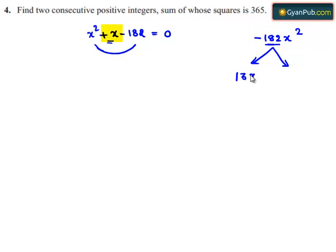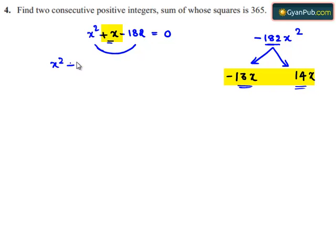Let us take 13x and 14x. 13x multiplied by 14x is plus 182x squared, but here we have minus 182x squared. So if we put a minus sign, minus 13x multiplied by 14x is minus 182x squared, and the sum minus 13x plus 14x is plus x. So minus 13x and plus 14x satisfy both conditions. Replace x with minus 13x plus 14x: x squared minus 13x plus 14x minus 182 equals 0.